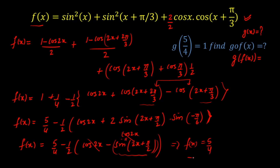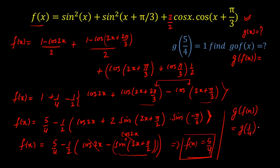So f(x) turns out to be a constant function equal to 5/4. Now we can easily calculate the composite function g(f(x)). Substituting the value of f(x): g(f(x)) = g(5/4), and g(5/4) = 1 is given. So the composite function is also a constant function, and our final answer is g(f(x)) = 1.